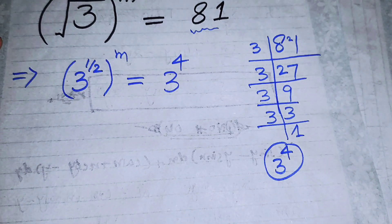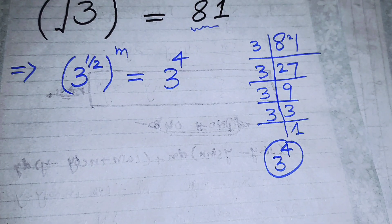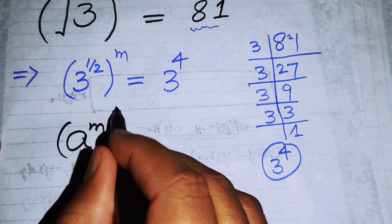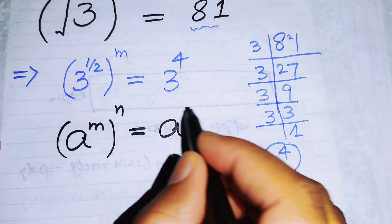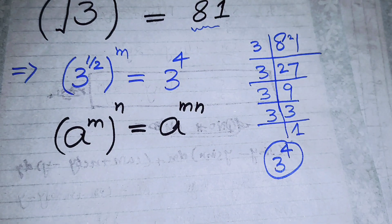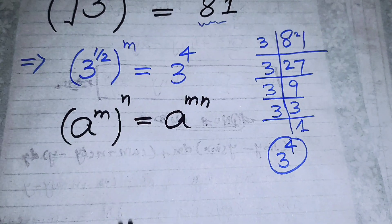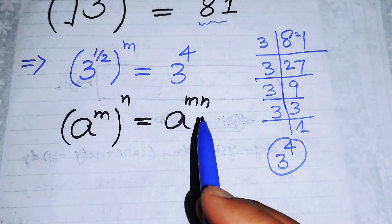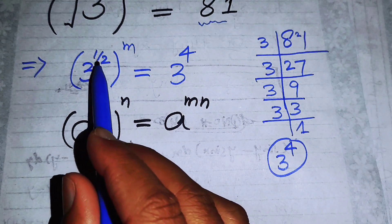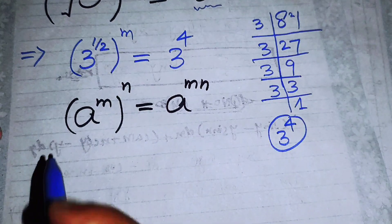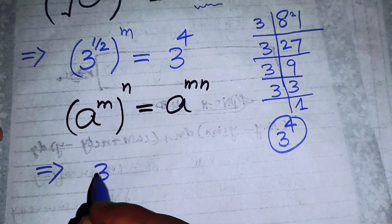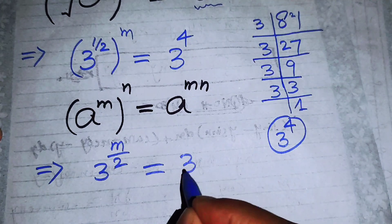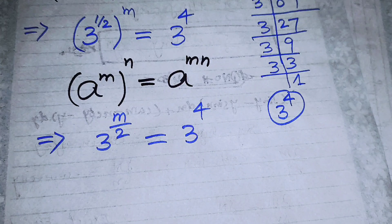Now we apply the exponent law: if we have a to the power of m, and its whole power n, it equals a to the power of m times n. So we multiply the nested exponents. Here, 3 to the power of 1 over 2, raised to power m, gives us 3 to the power of m over 2, equal to 3 to the power of 4.